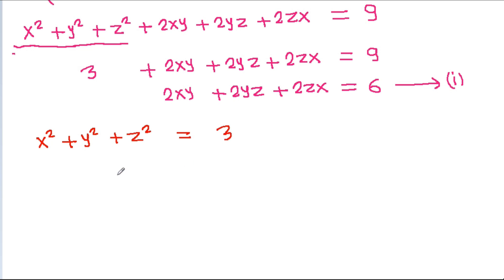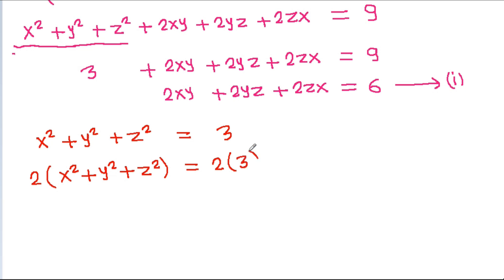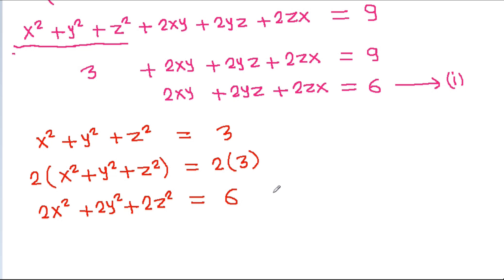And we have x square plus y square plus g square is equal to 3. If we multiply both sides by 2, then 2 times x square plus y square plus g square will be equal to 2 times 3, which is 6. Suppose this is equation 2.